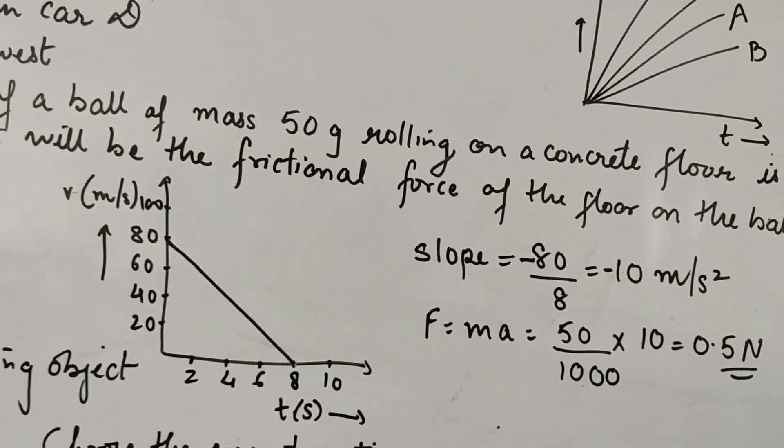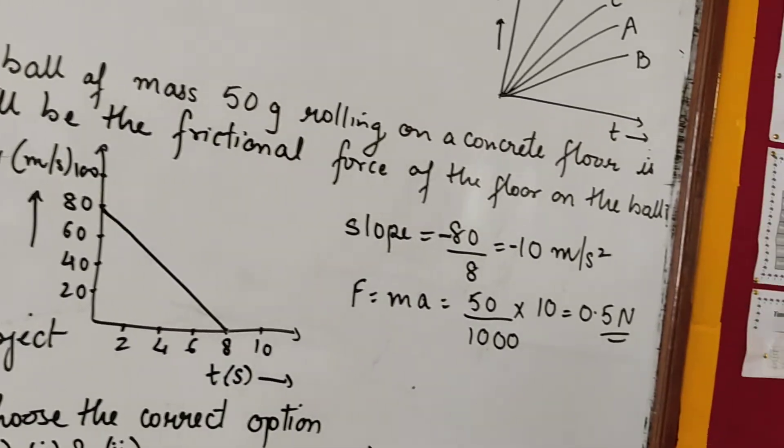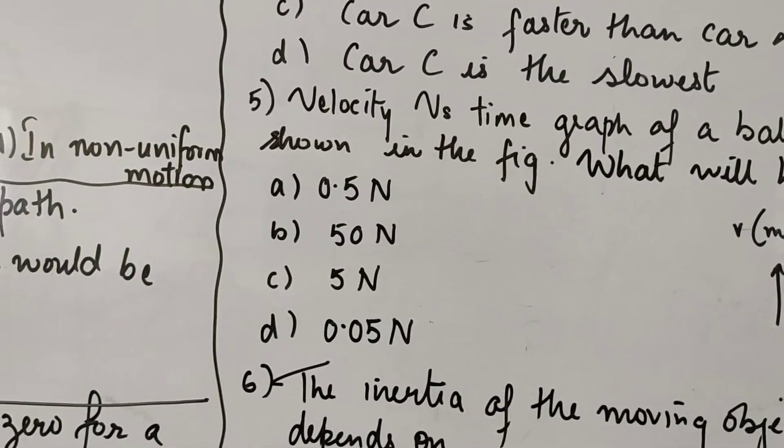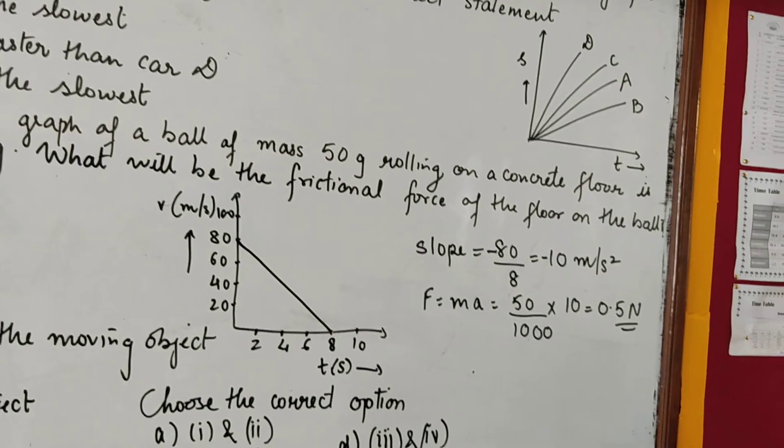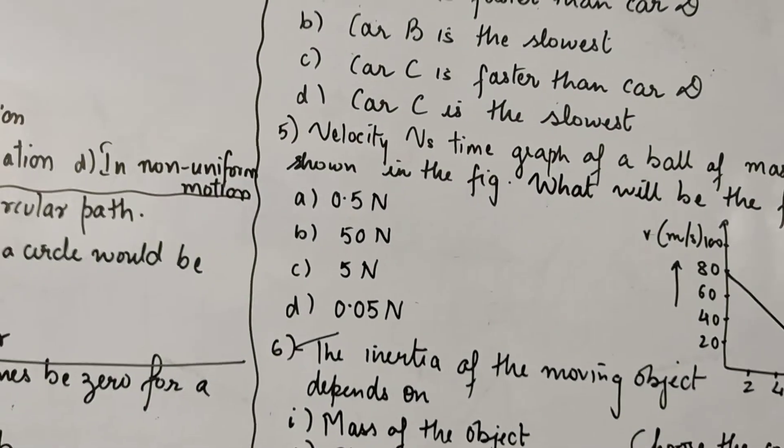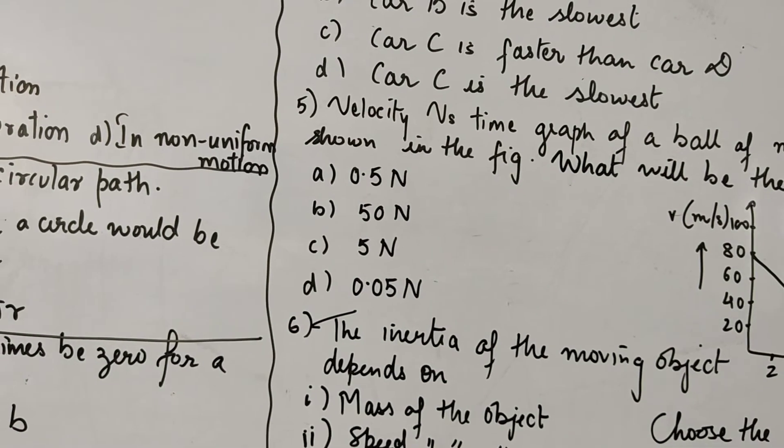So acceleration from VT graph is slope which is here minus 10 meter per second square. Minus, we know this is a negative slope as the velocity is decreasing, okay? So here you should put minus. Now F is equal to ma, mass 50 gram, just convert it in kg by dividing it by 1000 into 10. I have just taken the magnitude of this acceleration, 10. So when we do the calculation, we get F to be equal to 0.5 Newton. So force which is responsible for the retardation of this ball is 0.5 Newton. And here we have four options, what will be the frictional force of the floor on the ball? Out of four options, we can see 0.5 Newton is A option. So A option is correct.